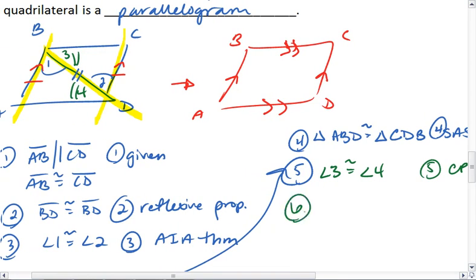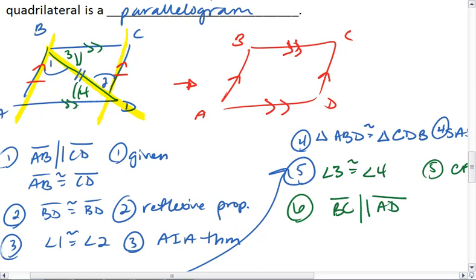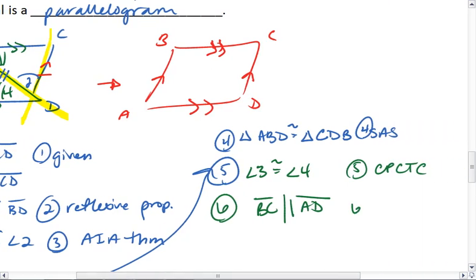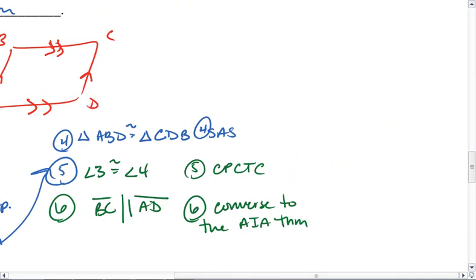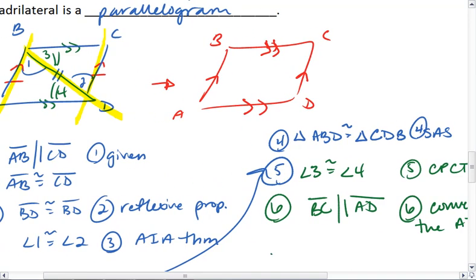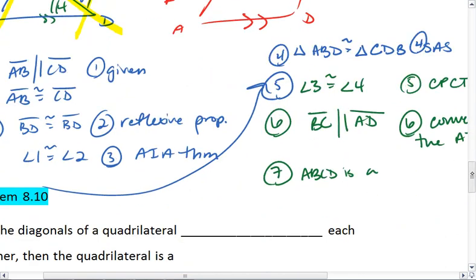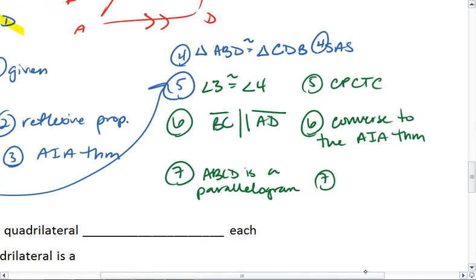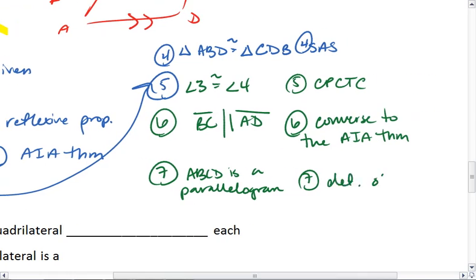If 3 and 4 are congruent, then side BC is parallel to side AD because we have our converse to the alternate interior angle theorem. And so we see that ABCD is a parallelogram, and that is the definition of a parallelogram.